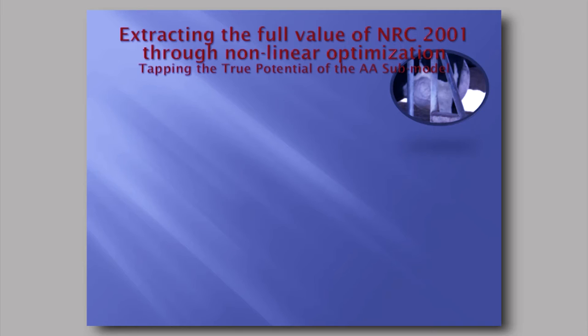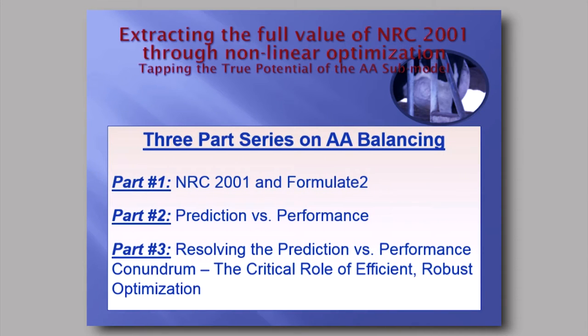We're going to share some of the information presented at the Discover Conference 2015 with respect to amino acid balancing, the NRC 2001 model, and the Formulate 2 core components — how they all work together. We'll break it into three segments. First, NRC 2001 and Formulate 2 for background. Second, prediction versus performance — NRC 2001 is an animal model that attempts to predict performance from inputs.